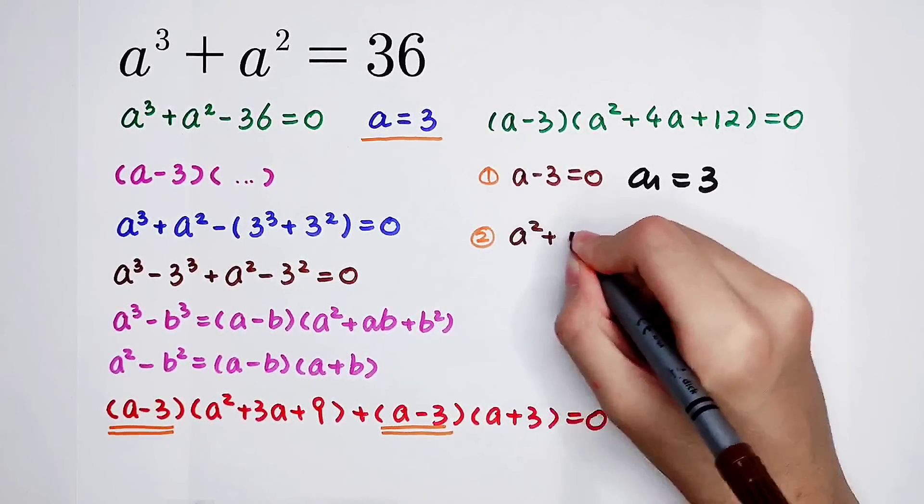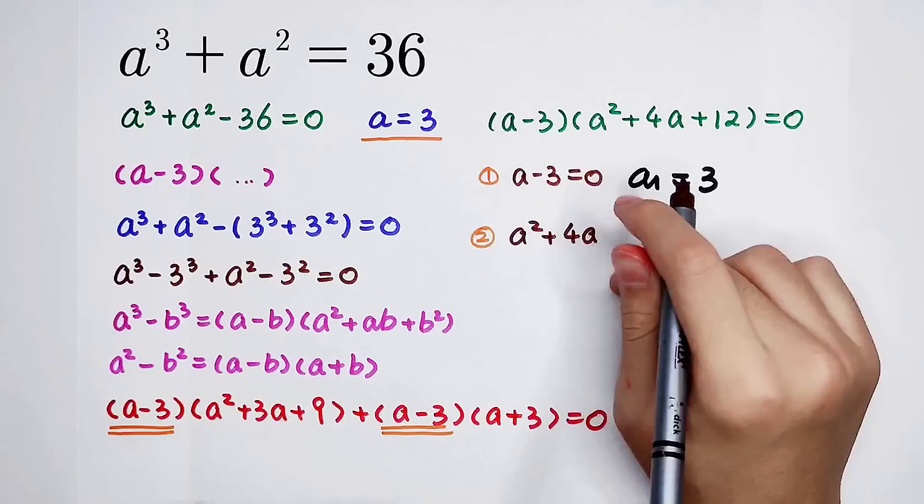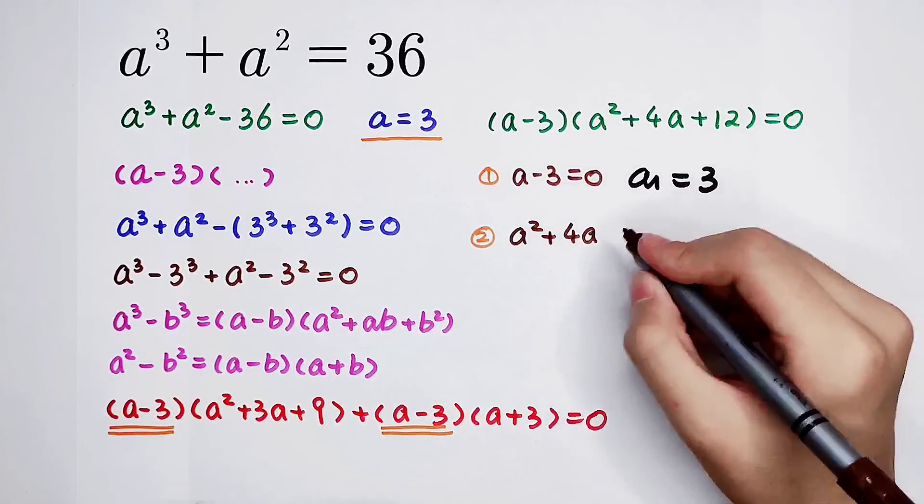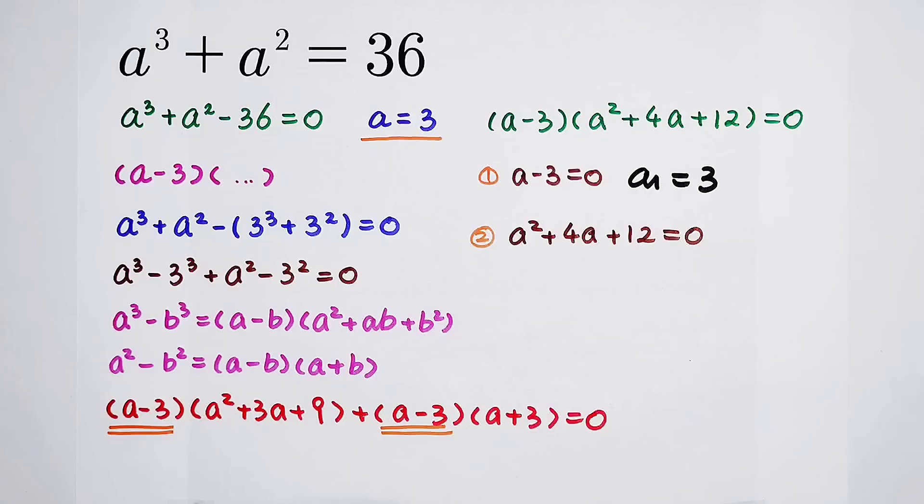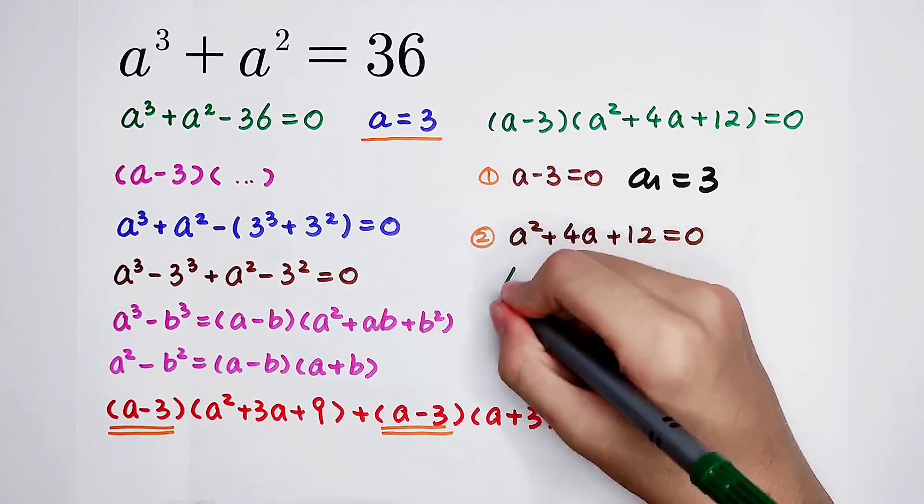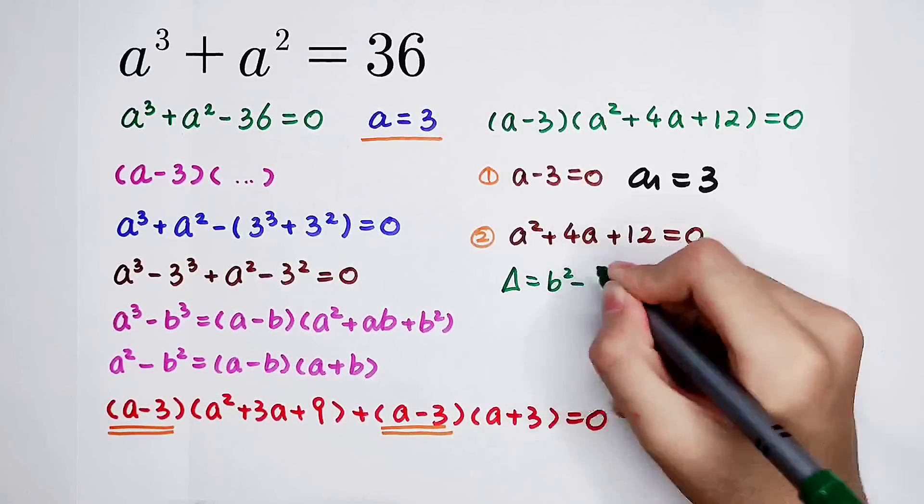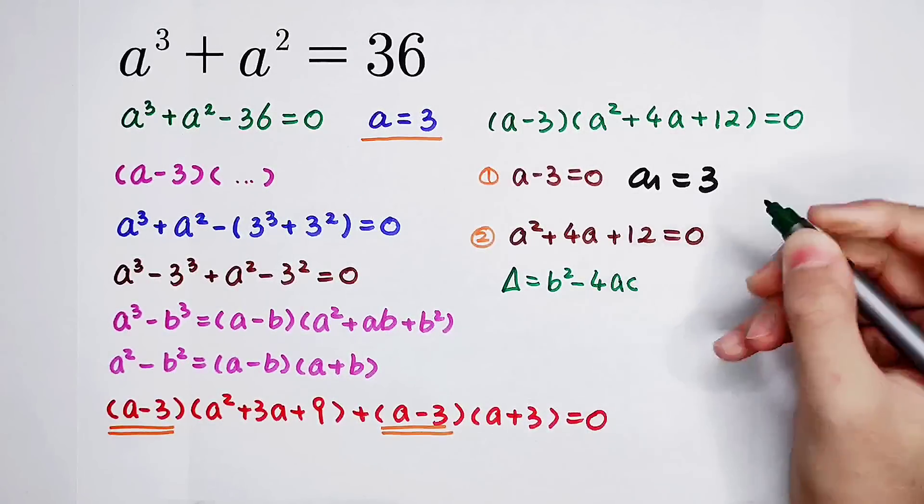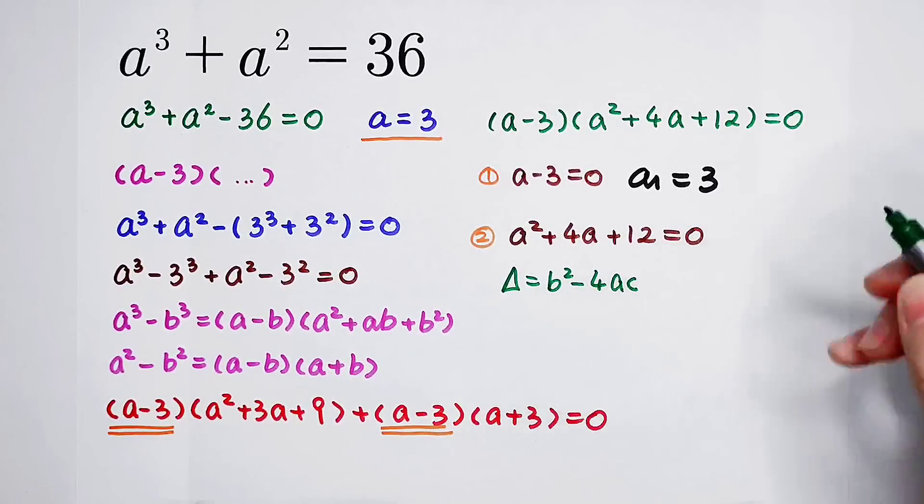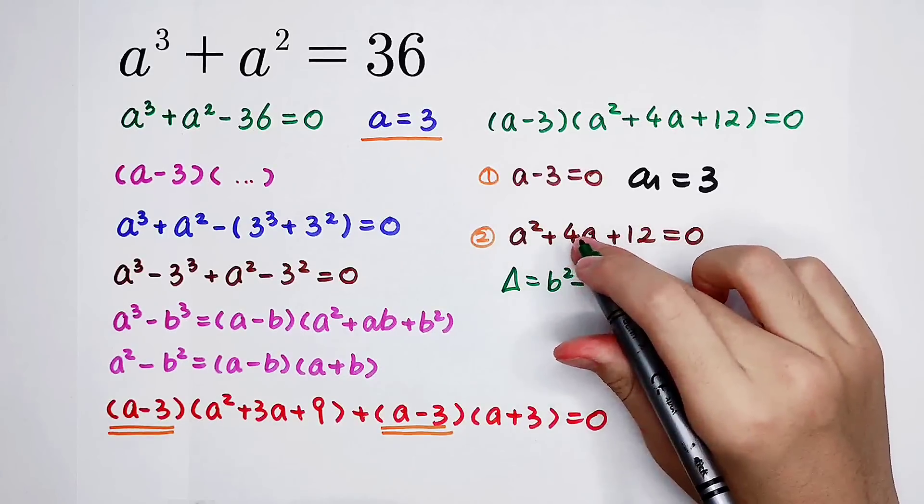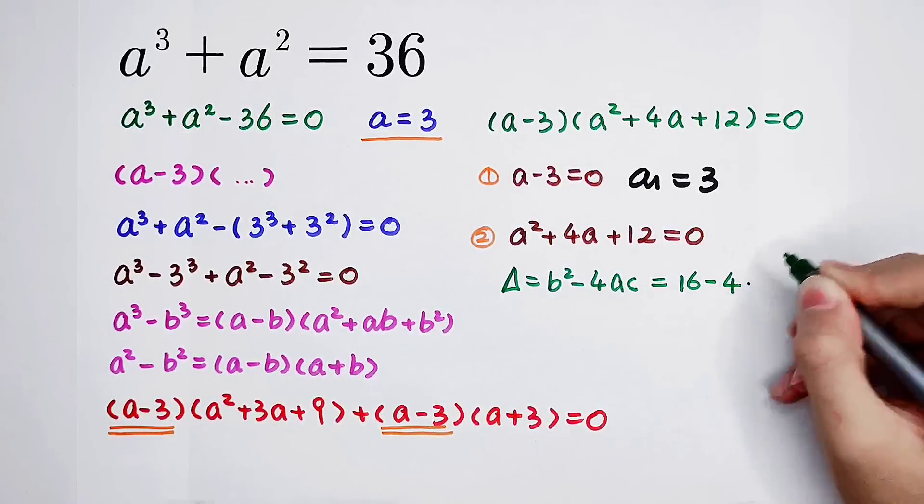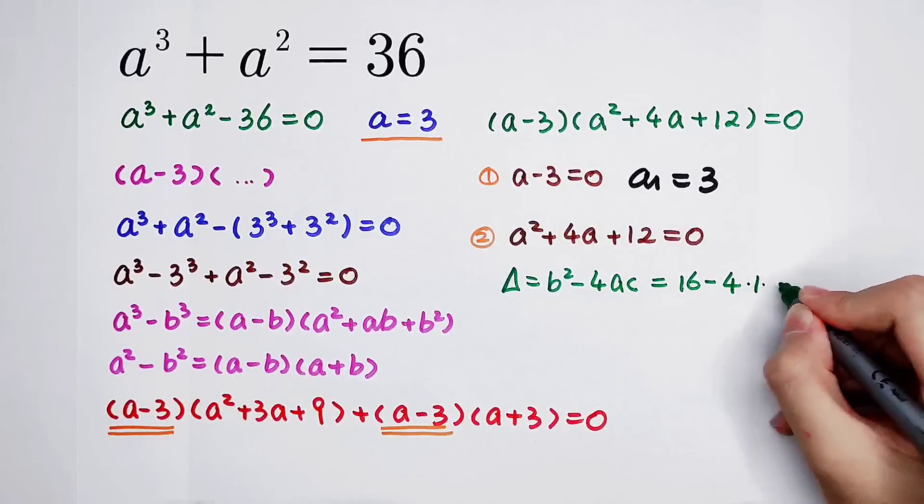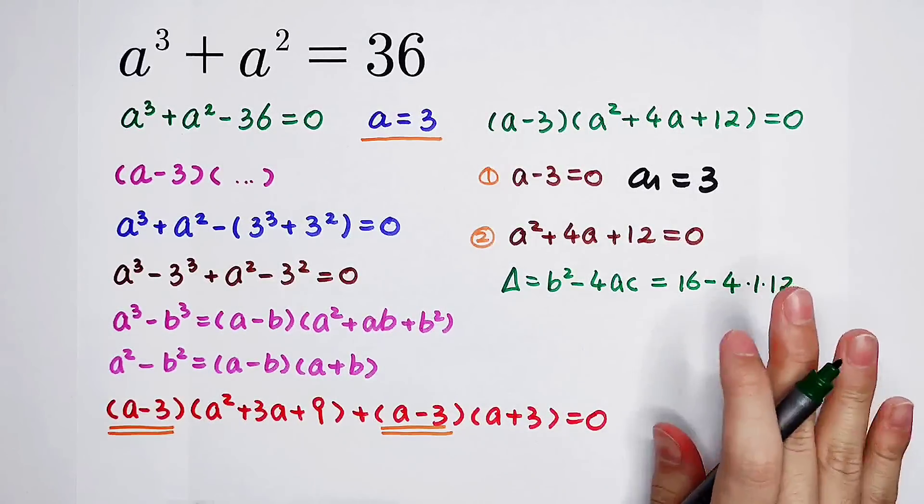The second case: a squared plus 4a plus 12 equals 0. In this case you can get the delta is b squared minus 4ac, which equals 16 minus 4 times 1 times 12, which is 16 minus 48.